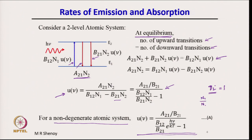N1/N2 equals e^((E2 − E1)/kT), and since E2 − E1 = hν, we substitute N1/N2 = e^(hν/kT). Let us designate this resulting expression for U_nu as equation A.